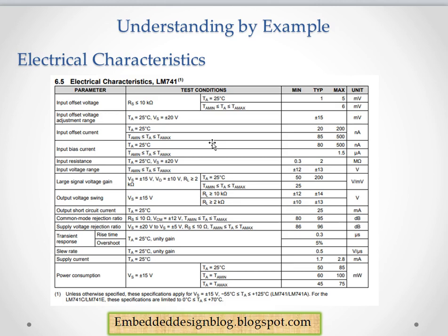For an op-amp, you might have learned in academics about parameters such as input offset voltage, input offset voltage adjustment, input offset current, input bias current, output voltage swing, supply current, and at what temperature. These are all the basic electrical specifications mentioned in a datasheet. You need to understand the definition of each parameter and then use it in your circuit design.